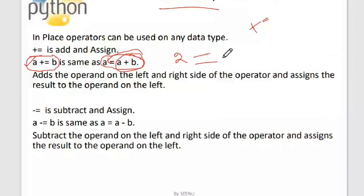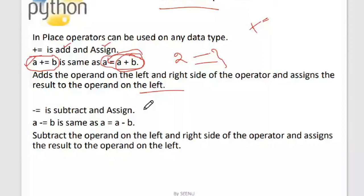So += means add and assign — two things happen: add first, then assign. It adds the operands on the left and right side of the operator and assigns the result back to the operand on the left side. Similarly, -= means subtract and assign: a -= b is the same as a = a - b. It subtracts the operands and assigns the result to the left side operand.